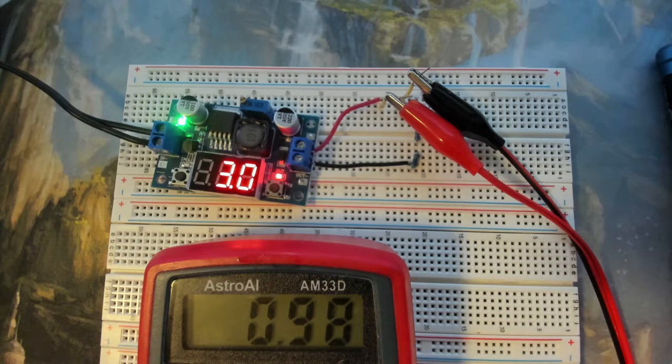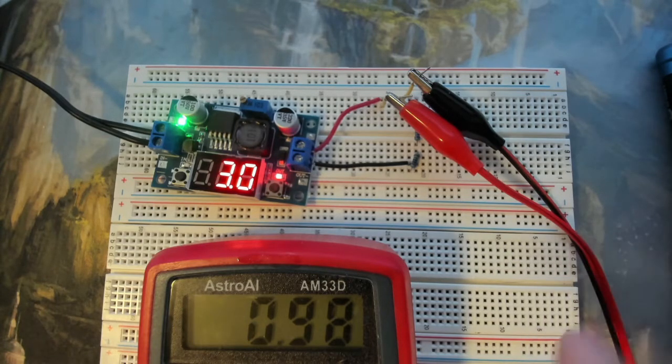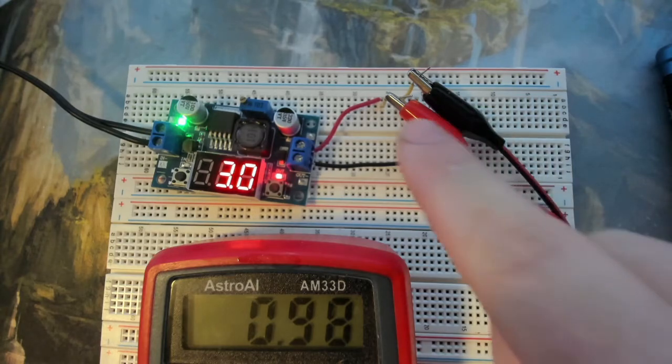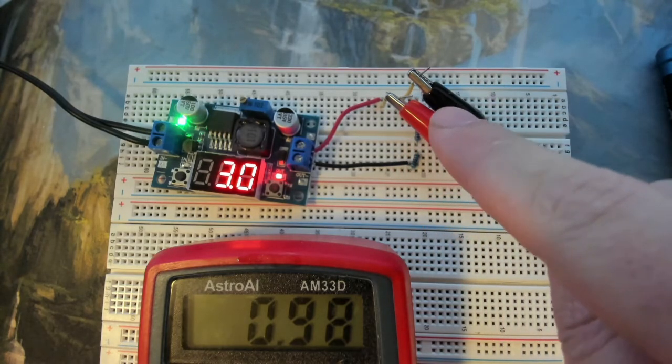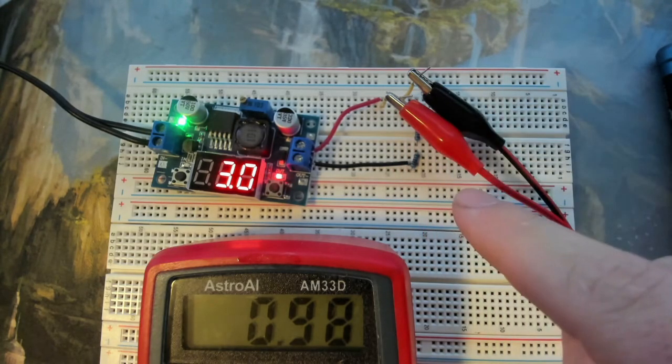Now, that means that there's one milliwatt going across our first resistor, and then two milliwatts being consumed by our two load resistors.